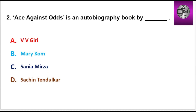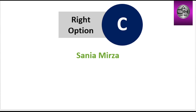Next question: 'Age Against Odds' is an autobiography book by — Options are Vivigiri, Mericom, Sanyamirja, Sachin Tendulkar. Right option is C: Sanyamirja.